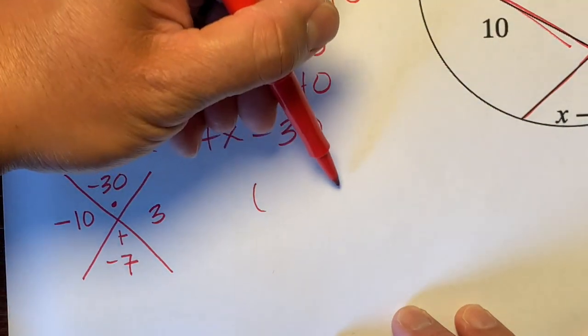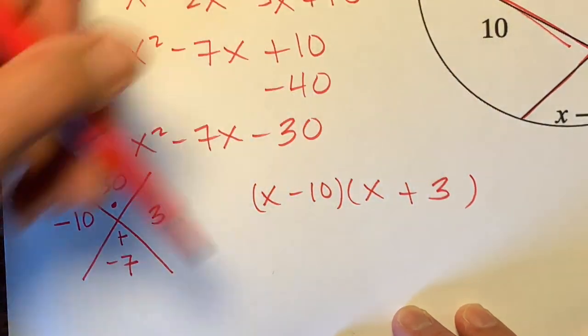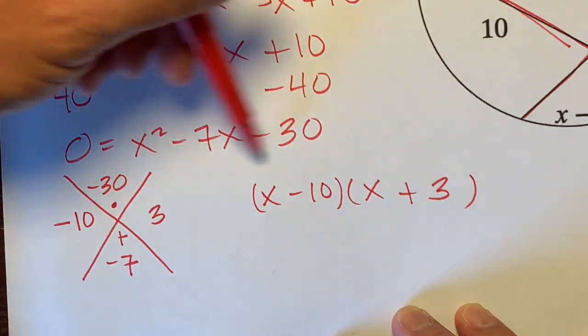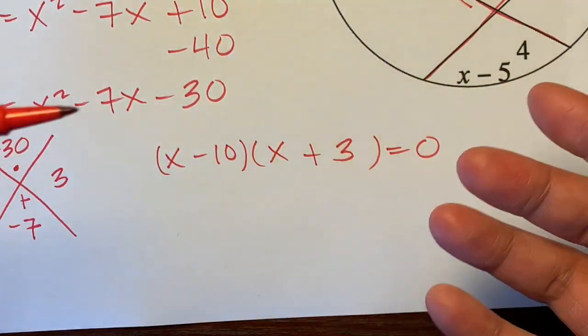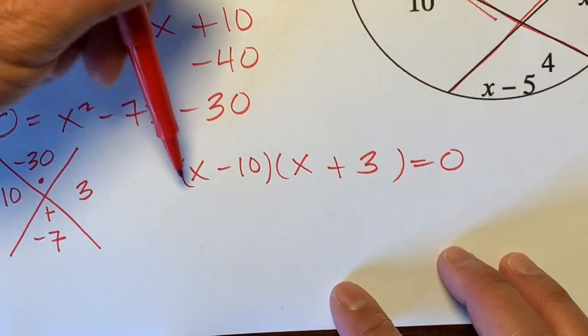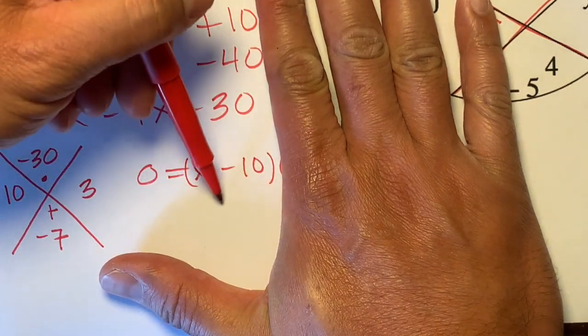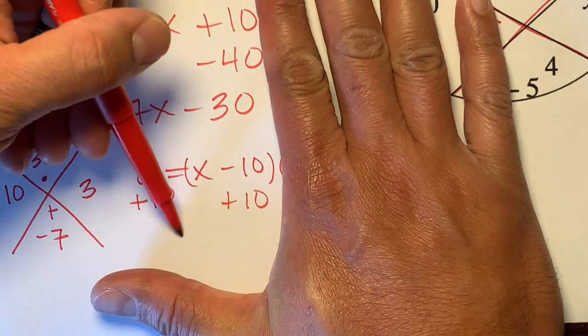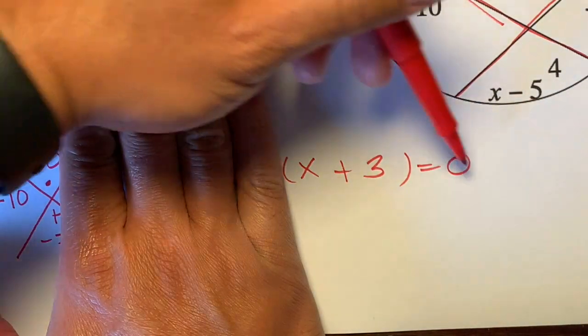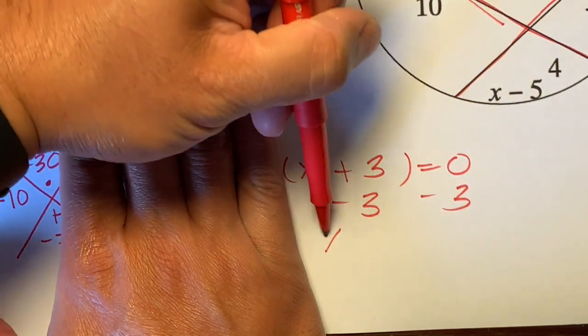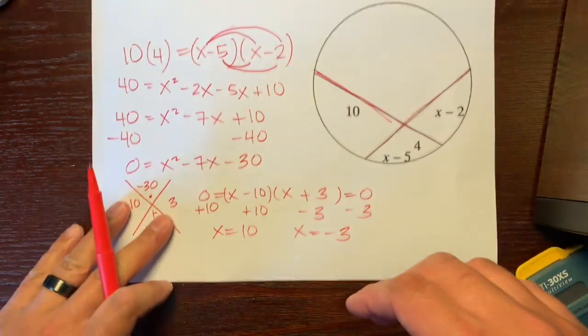So now we're going to put these two numbers into parentheses. We're going to write x minus 10 and x plus 3. And then, since this equals zero, we're going to set this equation equal to zero. We're going to use the zero product property. When you use the zero product property, you just set both parentheses equal to zero and solve for them. So we'll just focus on this one. X minus 10 is equal to zero. How do we get x by itself? We're going to add 10 to both sides. So x equals 10. So there's our first answer. And now we'll focus on this one for the zero product property. X plus 3 is equal to zero. We'll subtract 3 from both sides. So x is equal to negative 3.